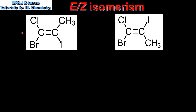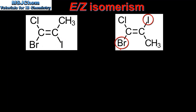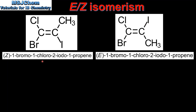Next we look at two more examples. Here we have two isomers which we will classify as the E isomer and the Z isomer. The isomer on the left has the bromine atom and the iodine atom — which have the highest priority due to their higher atomic numbers — on the same side of the carbon-to-carbon double bond. The isomer on the right has the bromine atom and the iodine atom on opposite sides. So on the left we have Z-1-bromo-1-chloro-2-iodo-1-propene, and on the right we have E-1-bromo-1-chloro-2-iodo-1-propene.